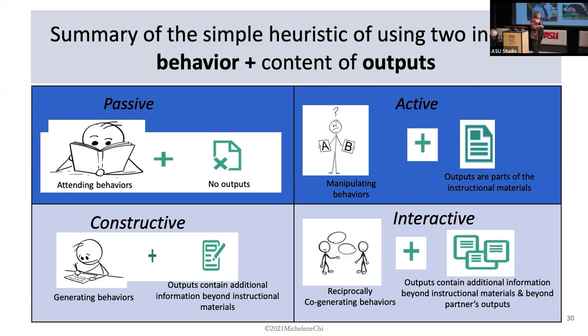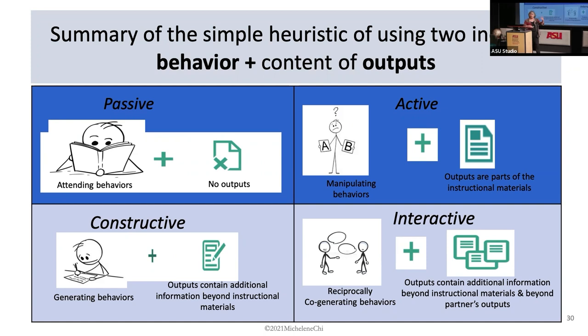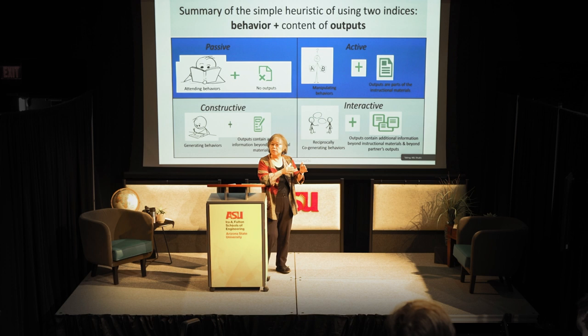Here's a summary cheat sheet of the four modes. When you're Passive, you're paying attention with no output. For Active, you're manipulating materials and your output is part of the given input. For Constructive, you're generating something new that wasn't in the materials. And for Interactive, you're reciprocally co-generative with your partner.